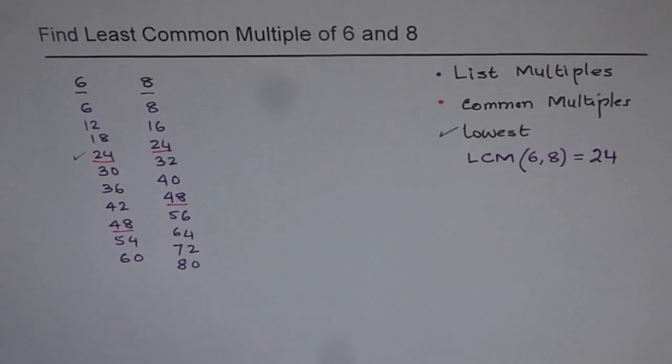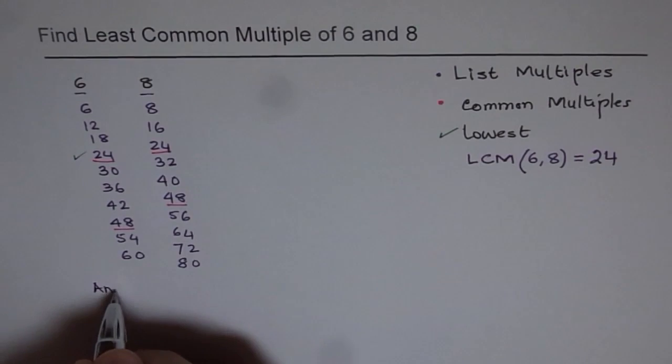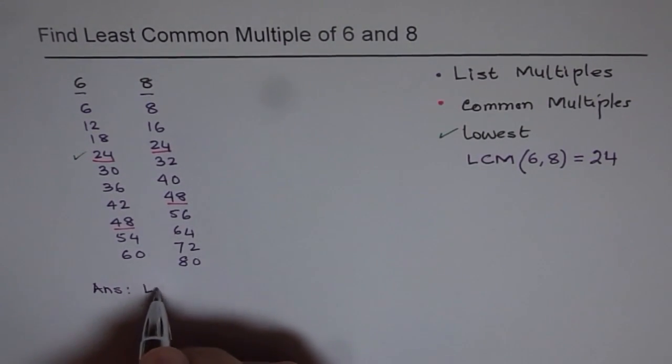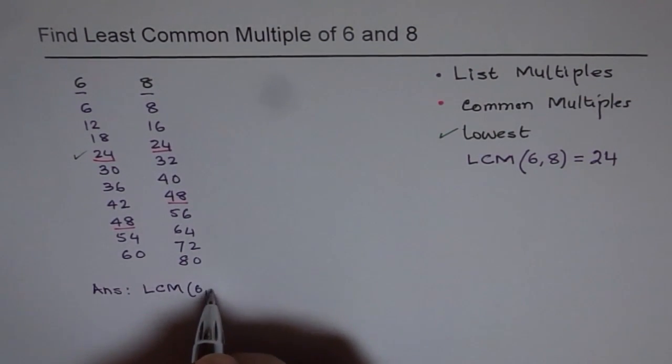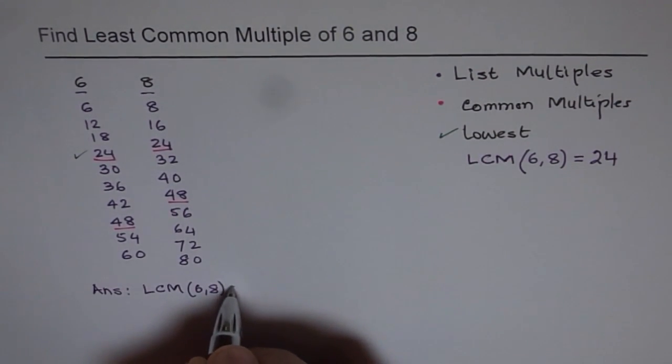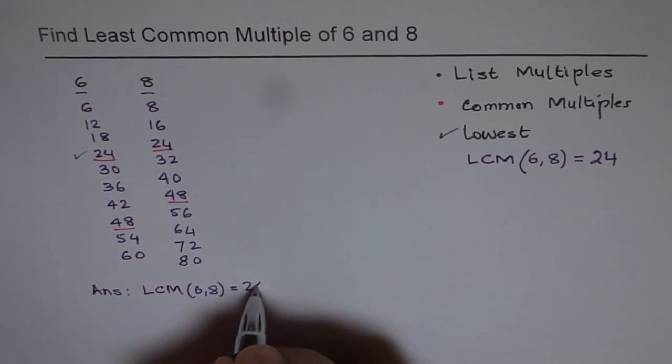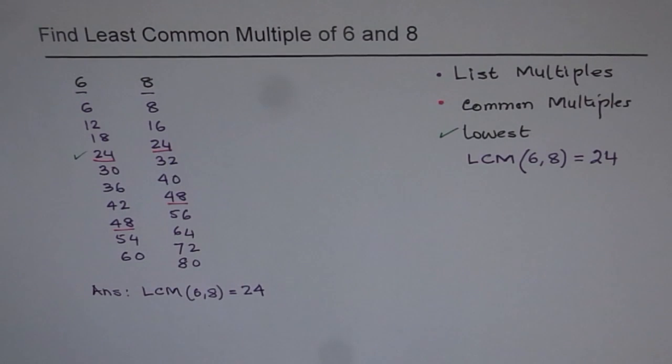So in short, you can write like this. So our answer is, in this case, our answer is that the LCM least common multiple of 6 and 8 is equal to 24, correct? So that's an easy, neat way of doing it.